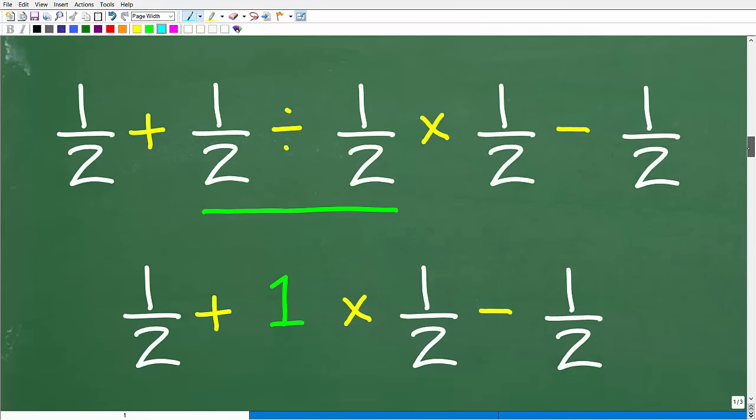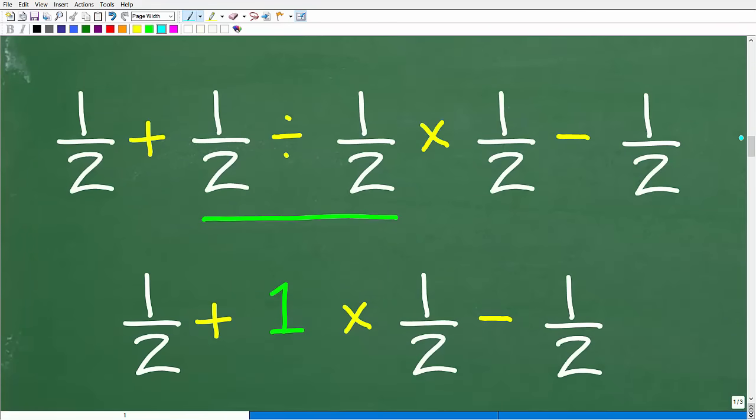All right, so again, we go back to our original problem. 1 half plus 1 half divided by 1 half times 1 half minus 1 half. We're focused in on this being our first step. And we know the answer is 1. So that's what we're going to write. We have 1 half plus 1 times 1 half minus 1 half.